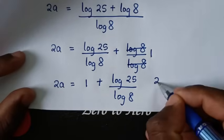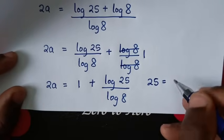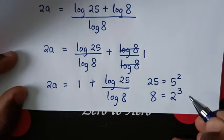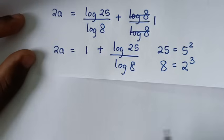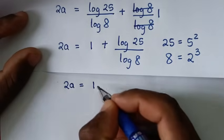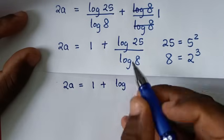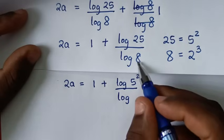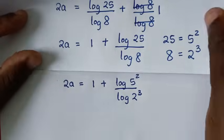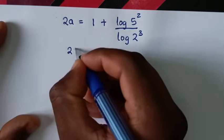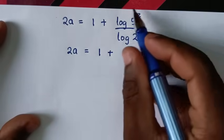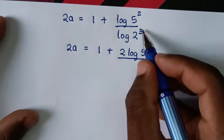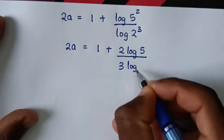Then from here, 25 is equal to 5 squared. So from our equation, it will be 2a is equal to 1 plus log of 5 squared over log of 8. And log of 8 is 2 power 3. In the next step, the power 2 from 5 squared moves to the front giving 2 log of 5, and the power 3 from 2 cubed moves to the front giving 3 log of 2. So 2a is equal to 1 plus 2 log of 5 over 3 log of 2.